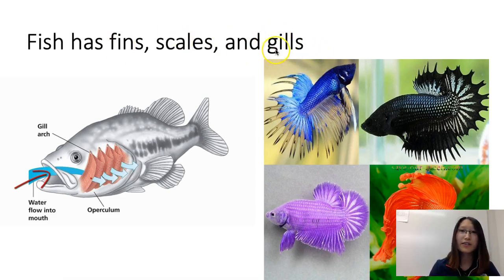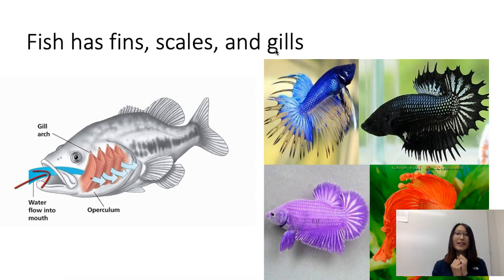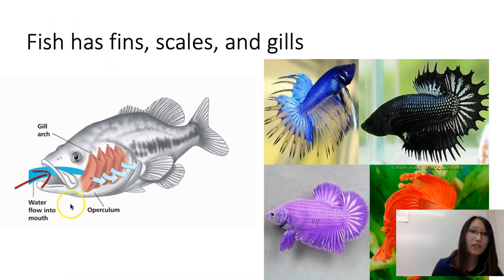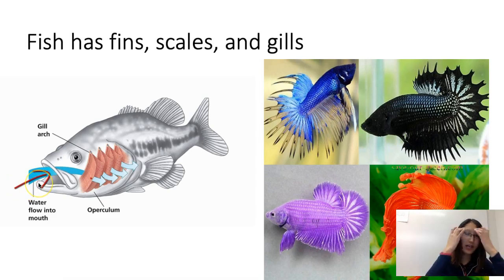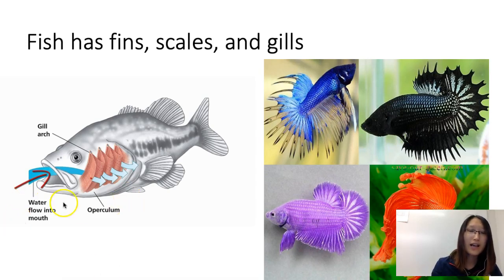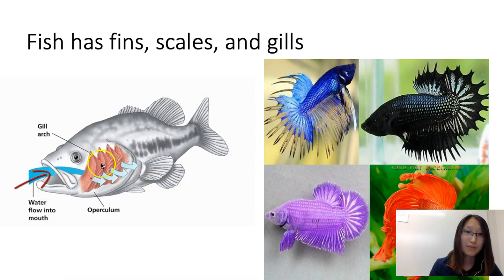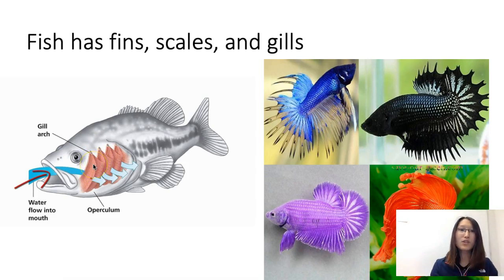Fish also have gills that allow them to take in oxygen and get rid of carbon dioxide — the gas exchange process. A fish opens its mouth to allow water containing dissolved oxygen to flow in. As the water flows from the mouth out through the gill, hair-like structures pick up the oxygen into the bloodstream.